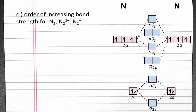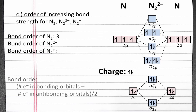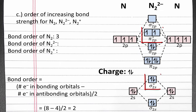In part c, we want to find the order of increasing bond strength for N2, N2²⁻, and N2⁺. Bond strength increases with increasing bond order, so we'll determine the bond order of all three. The charge of N2²⁻ means we have 2 additional electrons, giving a total of 12 electrons to fill the molecular orbitals. We still have 8 electrons in bonding orbitals, but now we have 4 electrons in antibonding orbitals. So 8 minus 4 divided by 2 equals 2 — the bond order of N2²⁻ is 2.